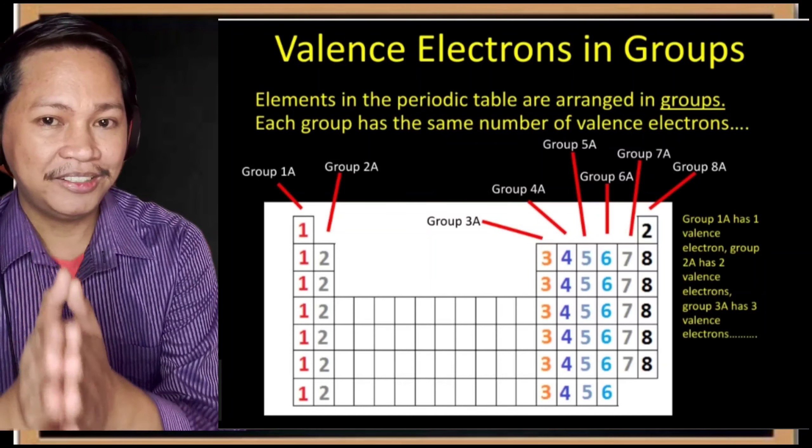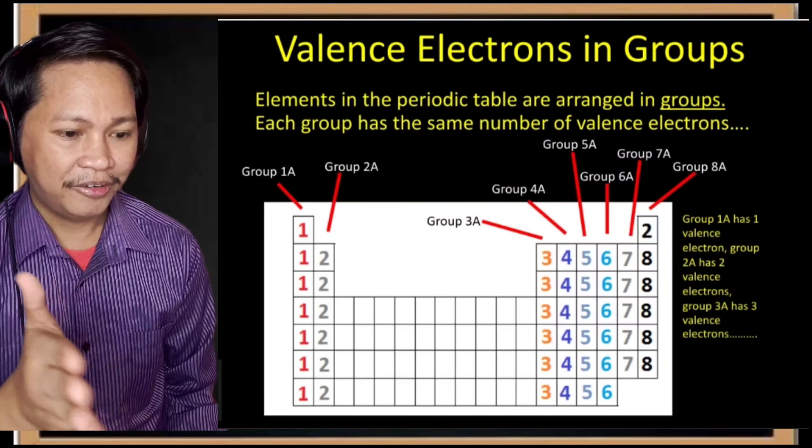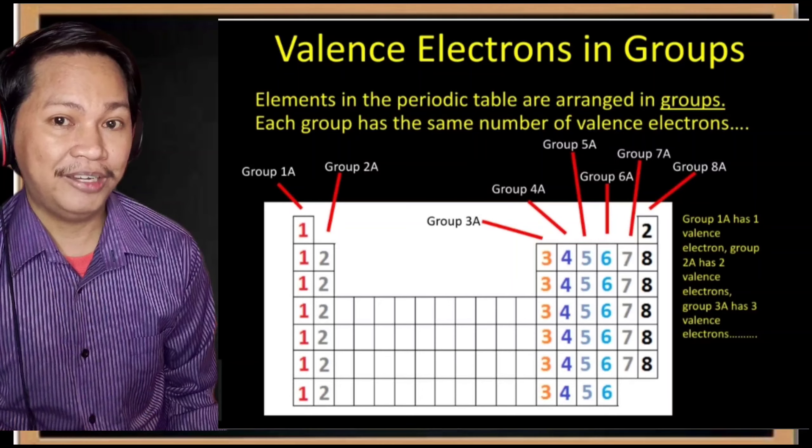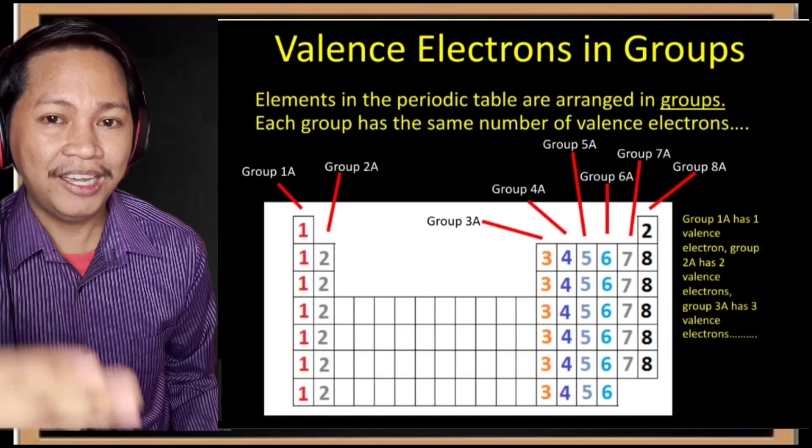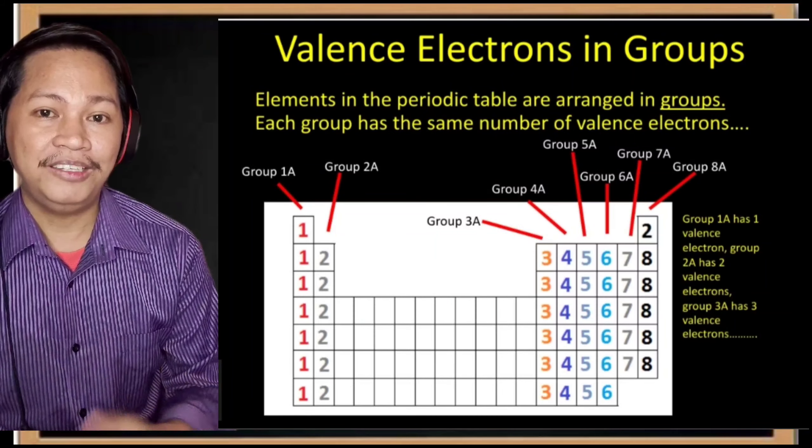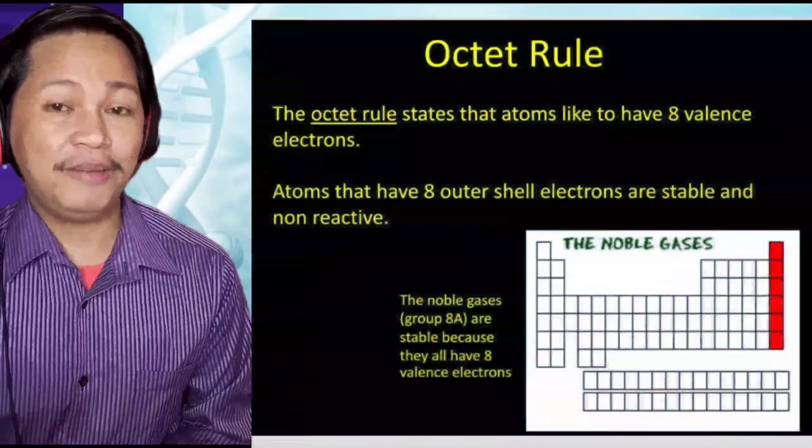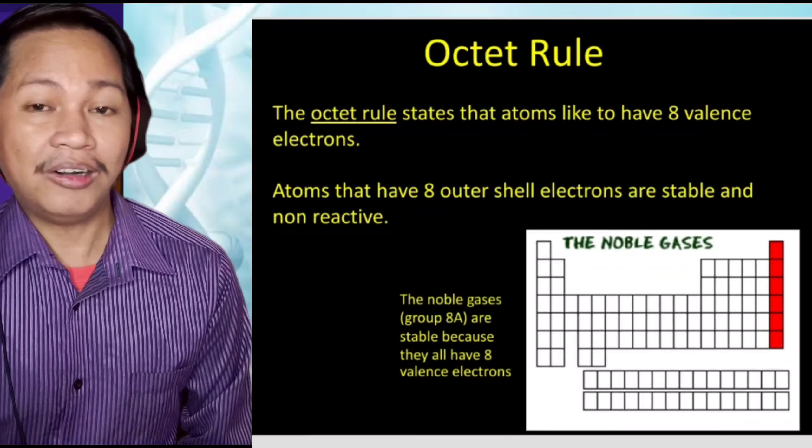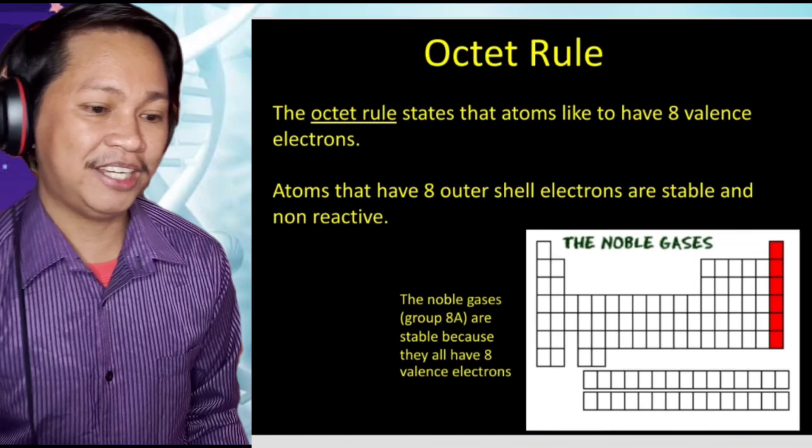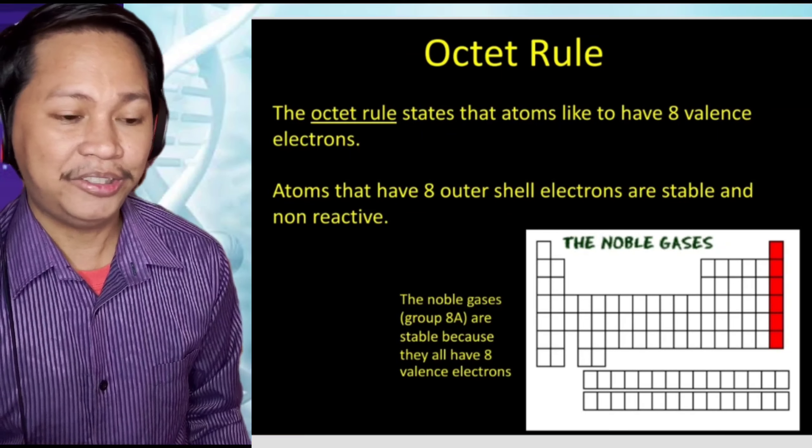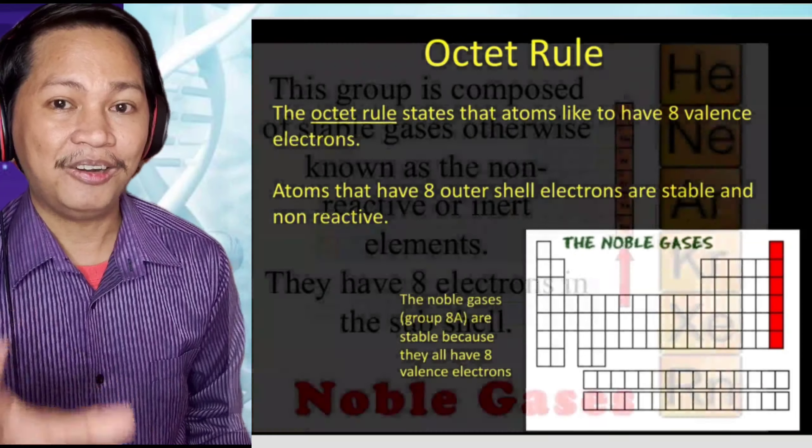All elements under column 2 have 2 valence electrons or outermost electrons. Then we have 3 for 3A, 4 for 4A, 5 for 5A, 6 for 6A, 7 for 7A. For column 8, we consider these elements as inert gases or noble gases. These are stable. What does it mean by stable? We have a rule called the octet rule. The octet rule states that atoms like to have 8 valence electrons. Atoms that have 8 outer shell electrons are stable and non-reactive.